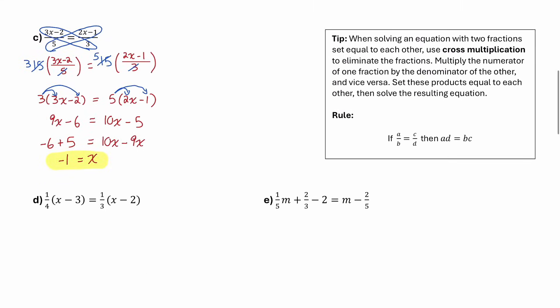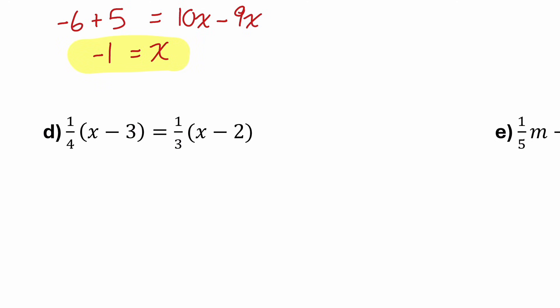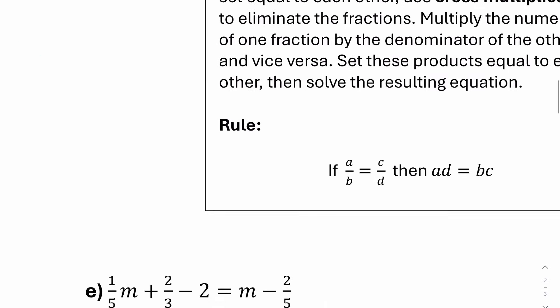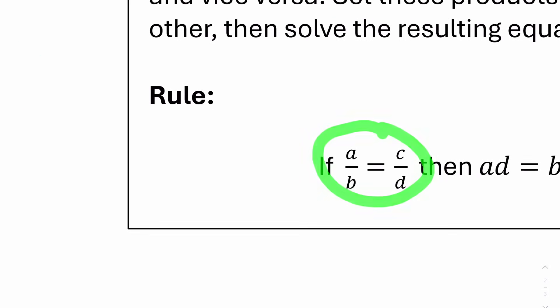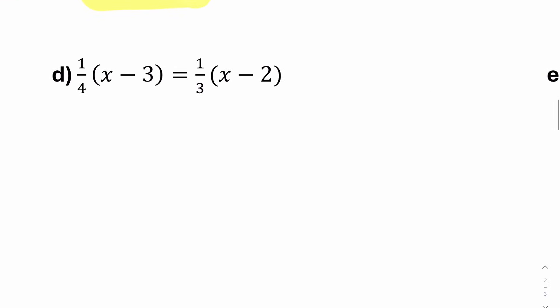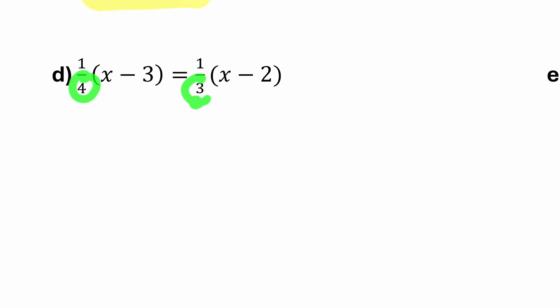Now let's continue on to part D. This one looks a bit different — it's not just a fraction equals a fraction. It's a fraction times a binomial equals a fraction times another binomial. So we won't use cross multiplication here. We only do cross multiplication when it looks exactly like fraction equals fraction. Instead, I'll notice that I have two fractions with denominators 4 and 3, and I can get rid of those by multiplying both sides by the lowest common denominator of 4 and 3.